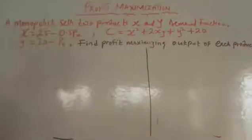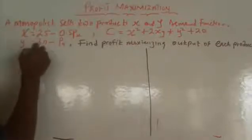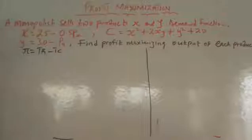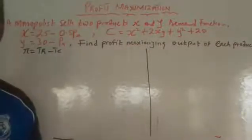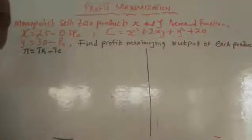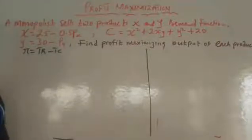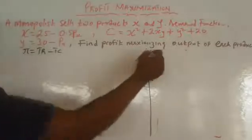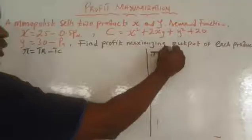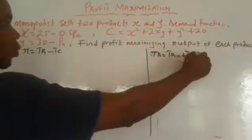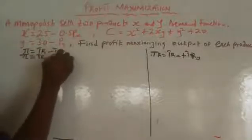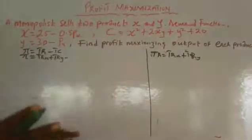To do this, the first thing we write is our profit function. Our profit function is going to be TR minus TC. But if you look at this question, the monopolist is selling two products, which means total revenue will be coming from two angles — from commodity X and commodity Y. So the sales from commodity X plus the sales from commodity Y together give us total TR. Therefore, our total revenue function is going to be TRx plus TRy, and our profit function is TRx plus TRy minus the combined cost function TC.